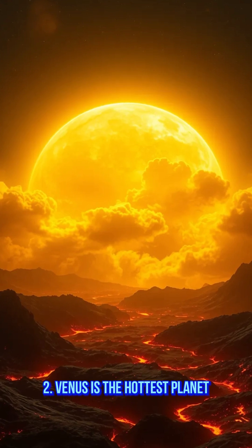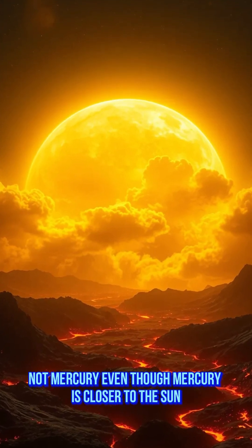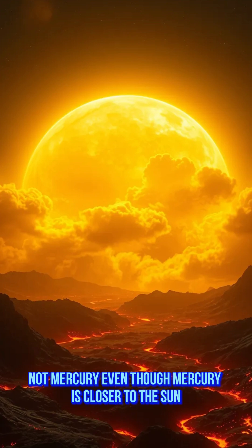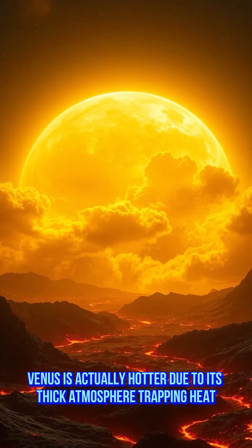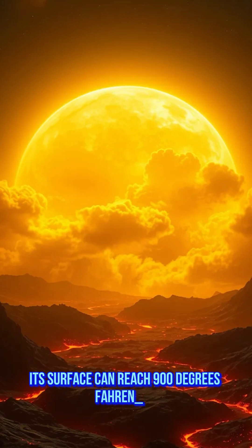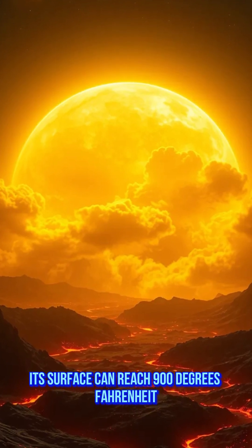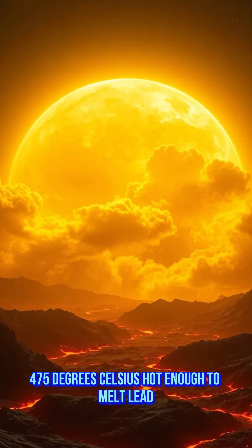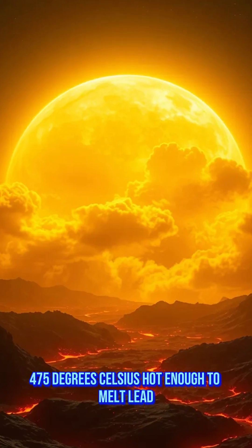Venus is the hottest planet, not Mercury. Even though Mercury is closer to the Sun, Venus is actually hotter due to its thick atmosphere trapping heat. Its surface can reach 900 degrees Fahrenheit, 475 degrees Celsius, hot enough to melt lead.